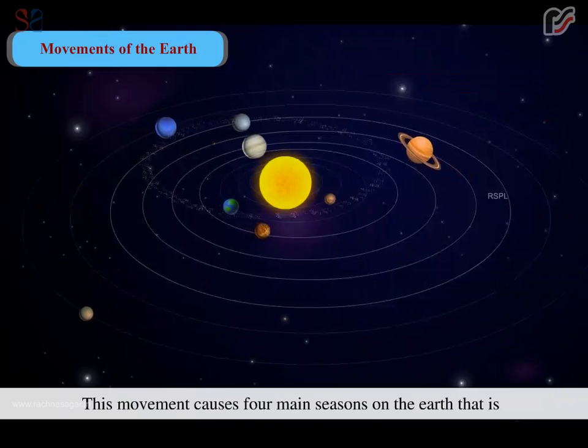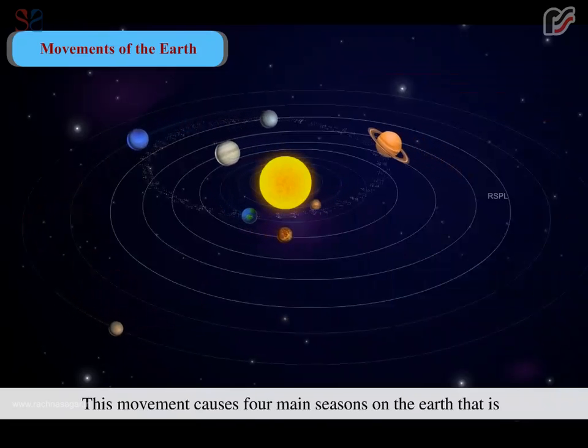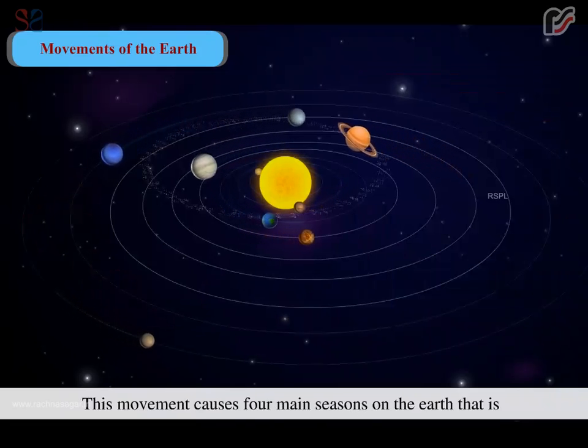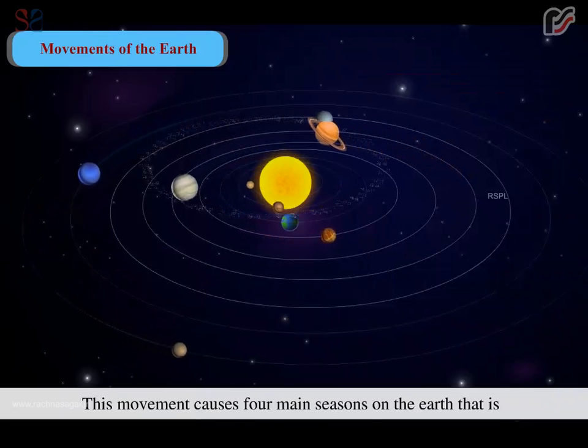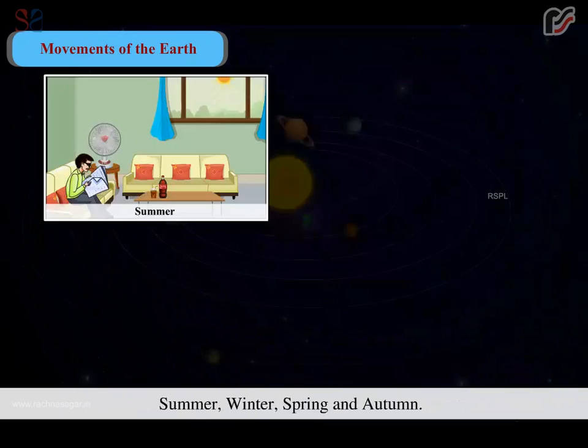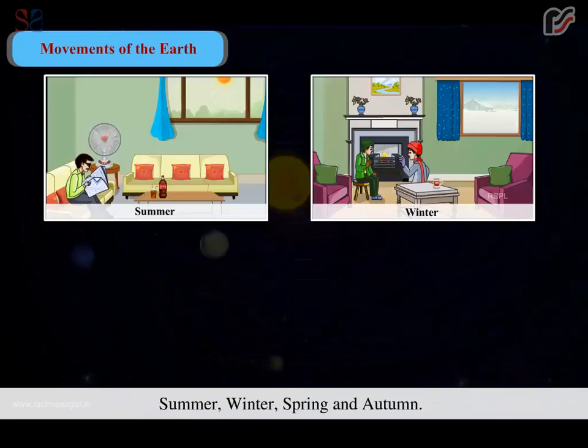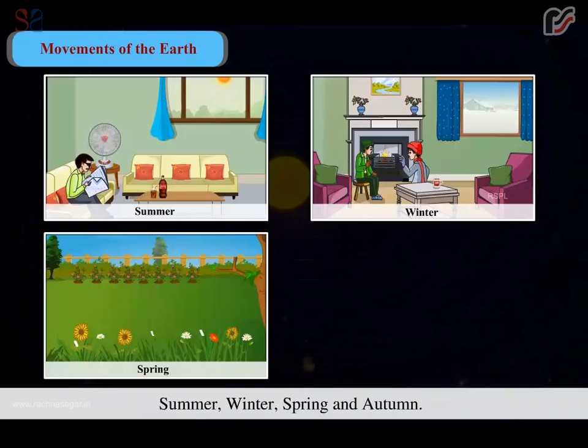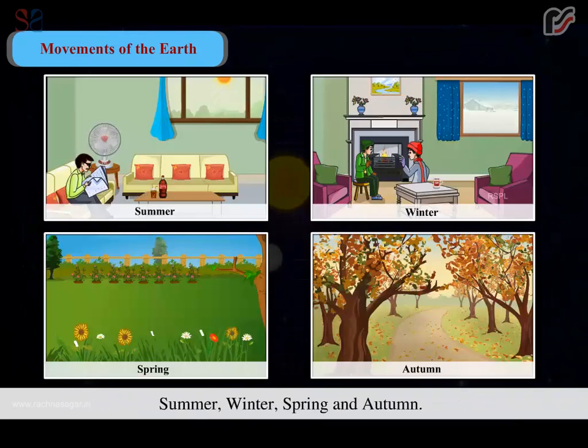This movement causes 4 main seasons on the earth: summer, winter, spring, and autumn.